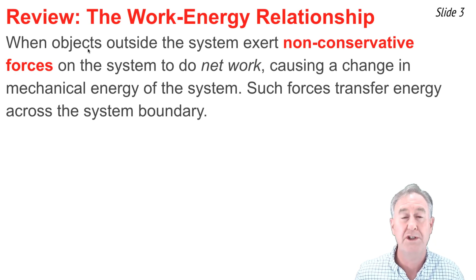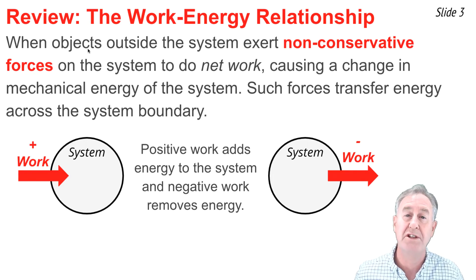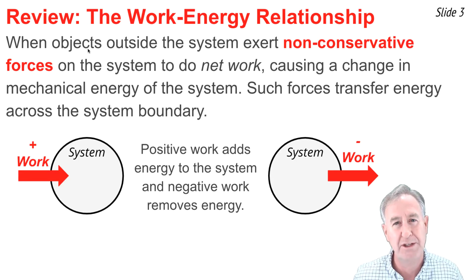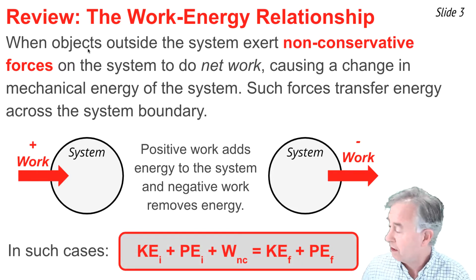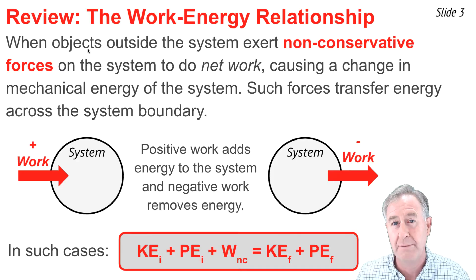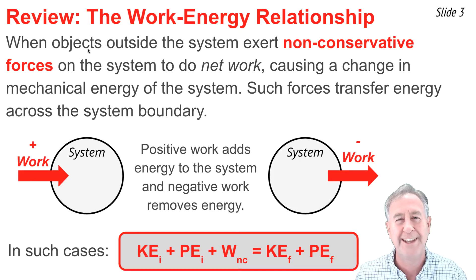These types of forces can transfer energy across the system boundary. When the work done is positive — the force is in the direction of motion — the energy of the system increases. But if the work is negative and the force is in the opposite direction of motion, then it causes the total mechanical energy of the system to decrease. In both cases, we'll use this equation to relate the total amount of energy initially, kinetic plus potential, to the total amount finally present within the system. The W-nc term in this equation is the work done by non-conservative forces. We'll be using the same equation in this video, except we'll be making a small adjustment to it.